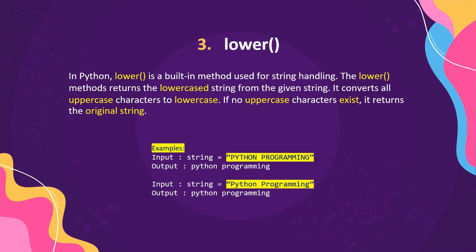For a second example of lower, the string 'Python Programming' has the first letters of each word capitalized. After applying lower, the first letters are converted to lowercase and the rest remain lowercase. That covers the lower method.